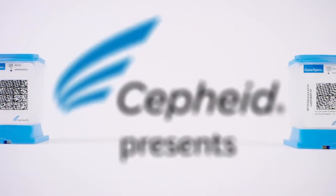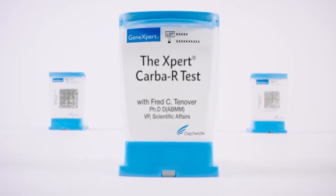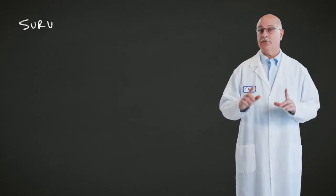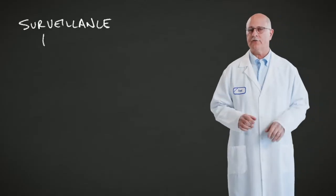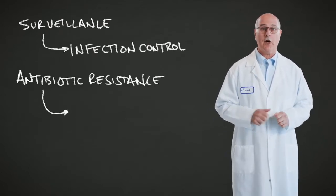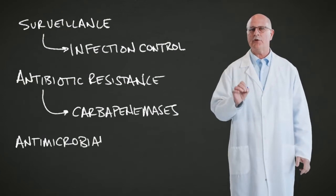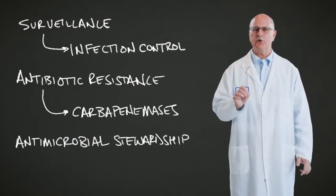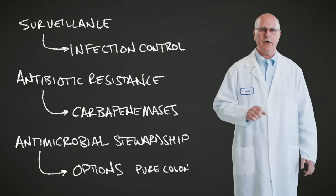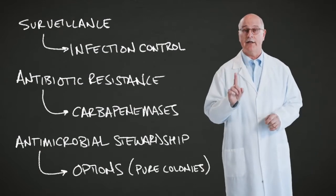Today we're going to discuss the expert CARB-R test, which is a really versatile cartridge. It's a surveillance test for infection control, an antibiotic resistance test for carbapenemases, and an antimicrobial stewardship tool to guide therapeutic options when you're testing pure colonies. And all of that is on label.